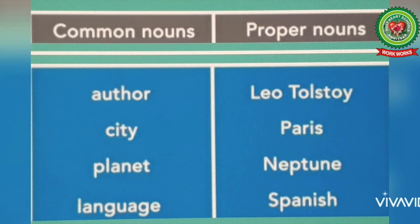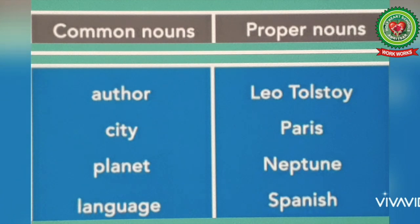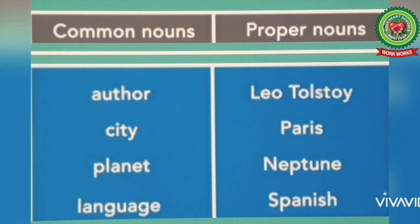Number two: 'city' — when we talk about city, it refers to the name of a common place, so it is a common noun. On the other hand, when we talk about Paris, it refers to the name of a particular place, so it is a proper noun.